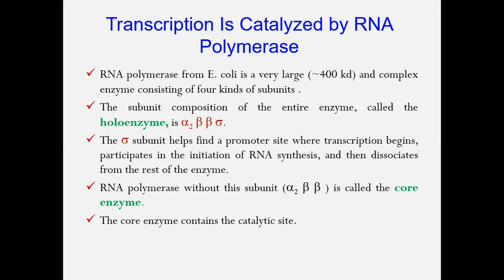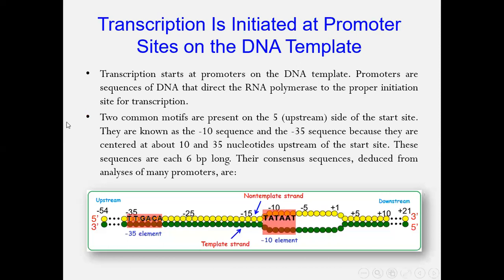RNA polymerase reaches the promoter site and initiates the transcription process. For example, the DNA has two strands running in three to five and five to three directions. The promoter identifies which strand will be the template strand and which will be the non-template strand.